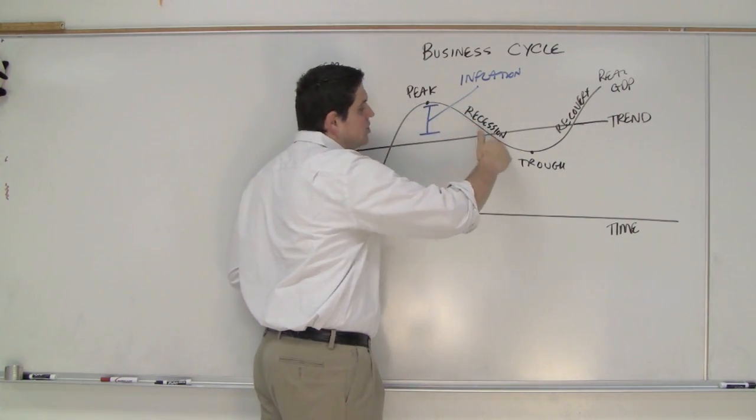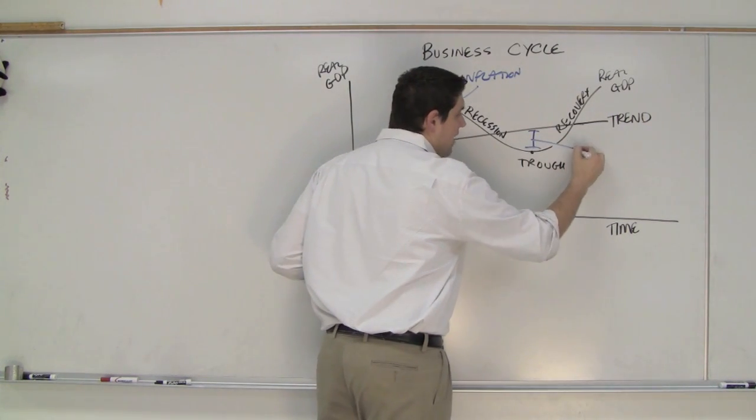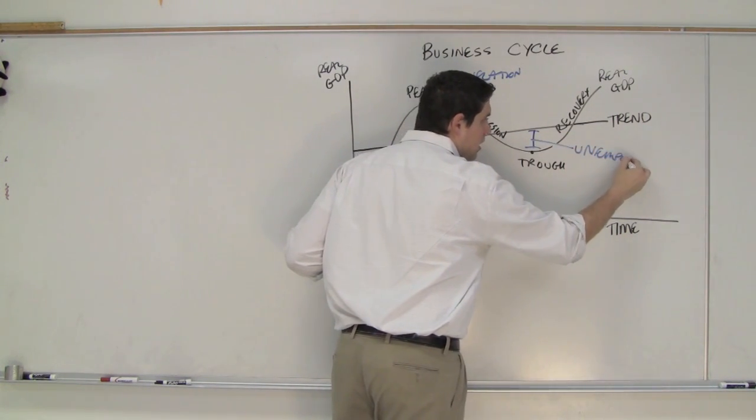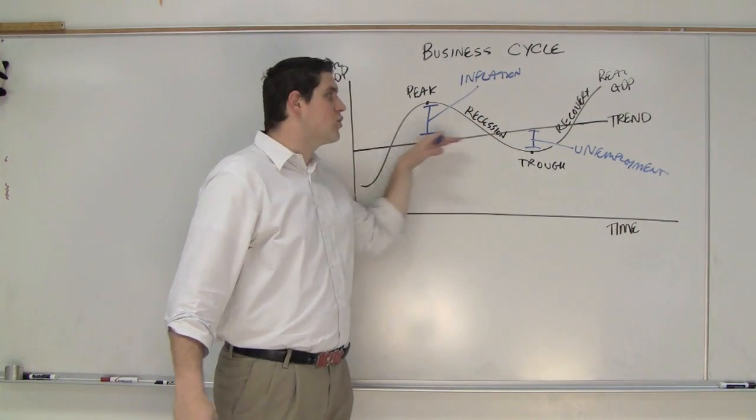Then we have the dipping recession where the economy is actually slowing down, and that would lead to this time when we have unemployment. All right?